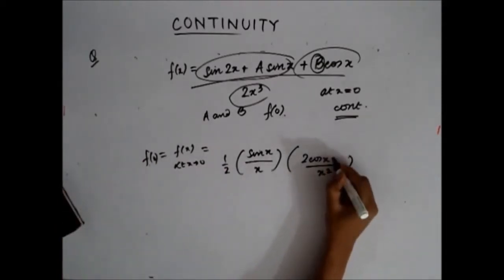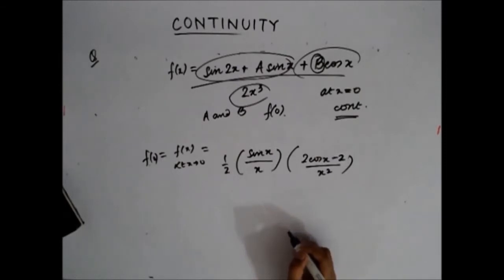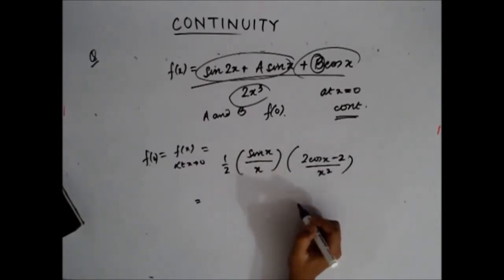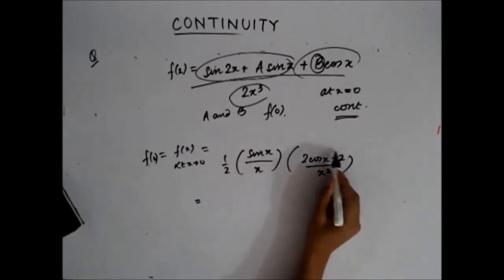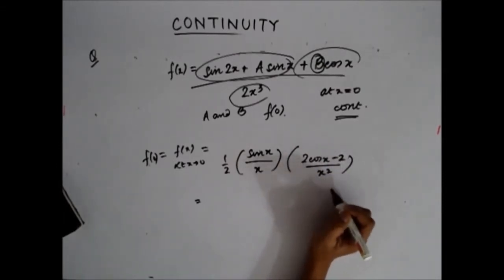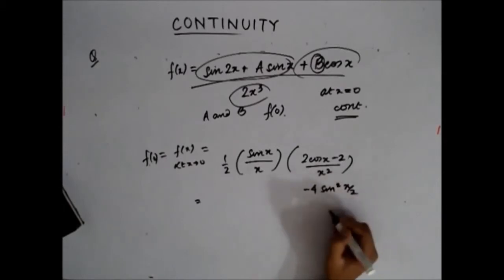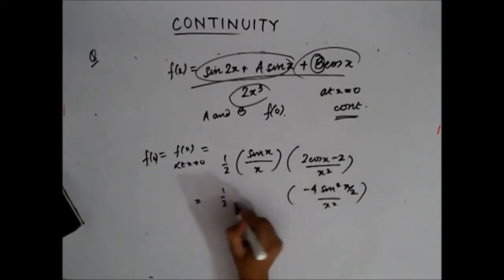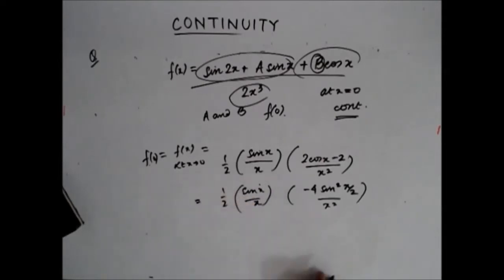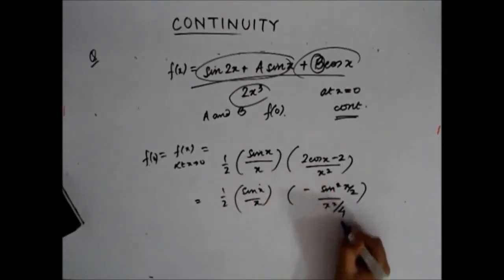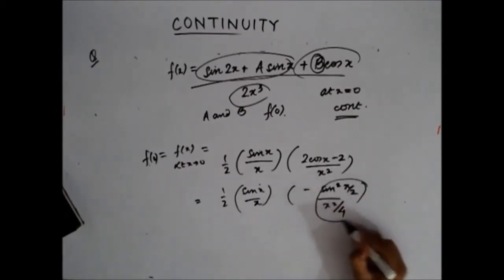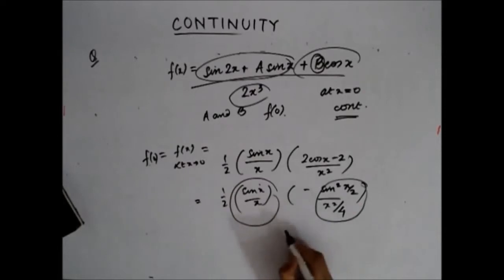With a = minus 2, the numerator 2 cos x minus 2 can be written as minus 4 sin²(x/2). Substituting and simplifying, both limit terms approach 1, and the answer comes out to minus one-half. So f(0) equals minus one-half.